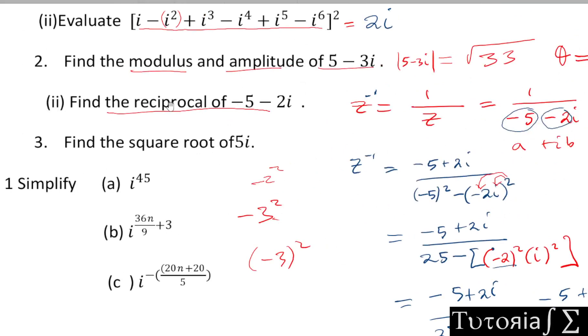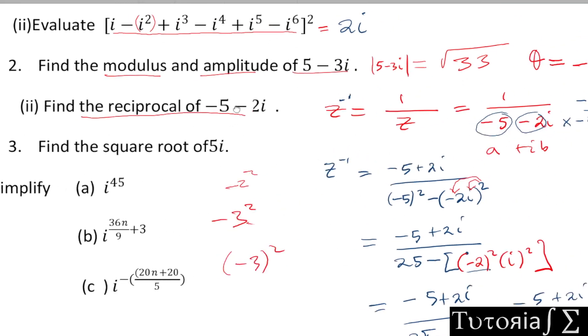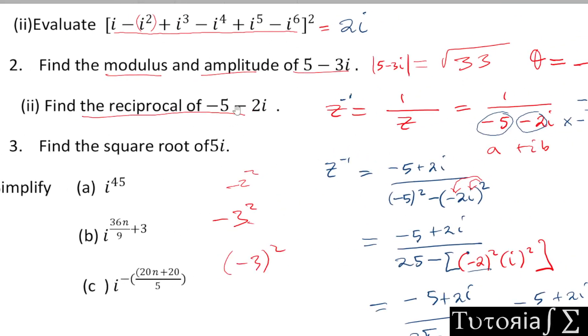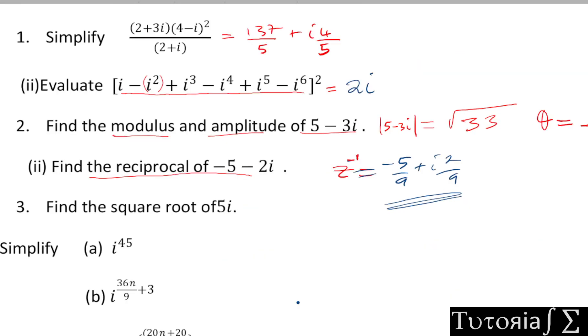So that is the reciprocal of z = (-5 - 2i): the answer is -5/9 + (2/9)i.